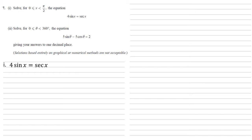The first thing to notice is that sec x is equal to 1 over cos x. So if we change that and multiply both sides by cos x, we get 4 sin x cos x equals 1.